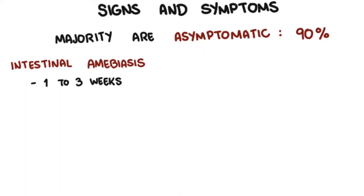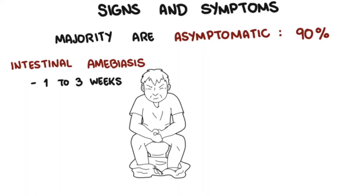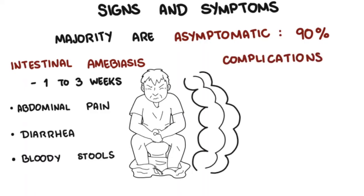Symptoms include mild diarrhea to severe dysentery, producing abdominal pain, diarrhea, and bloody stools. Complications of intestinal amoebiasis include fulminant colitis with bowel necrosis, which can lead to perforation.